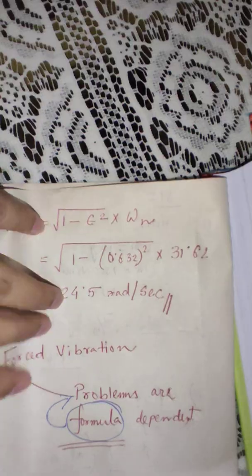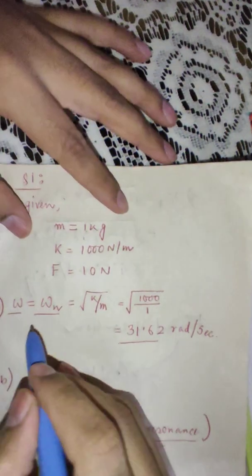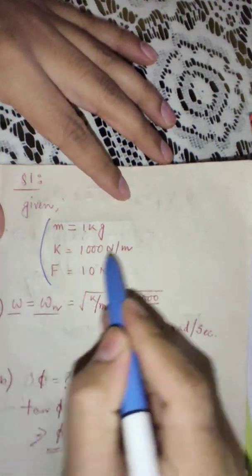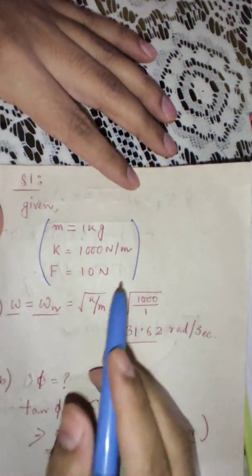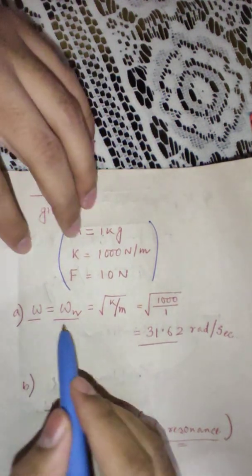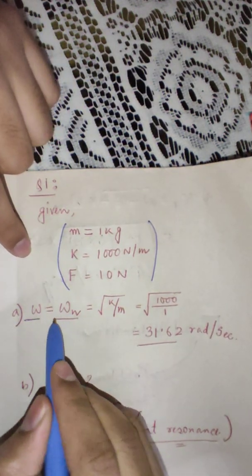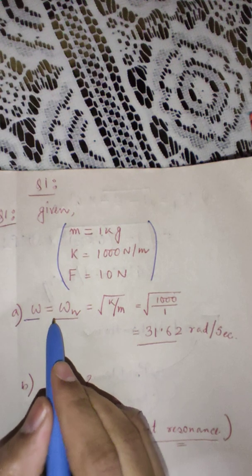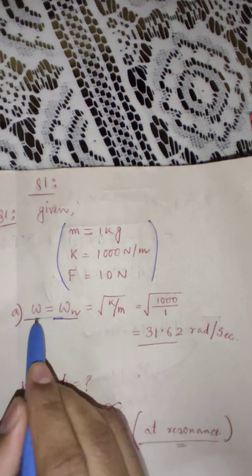I am repeating this solution once again from the beginning. At first I have written the given data. Based on this I have started the problem. At resonance I need to find out the frequency. So omega is equal to omega n, we all know.